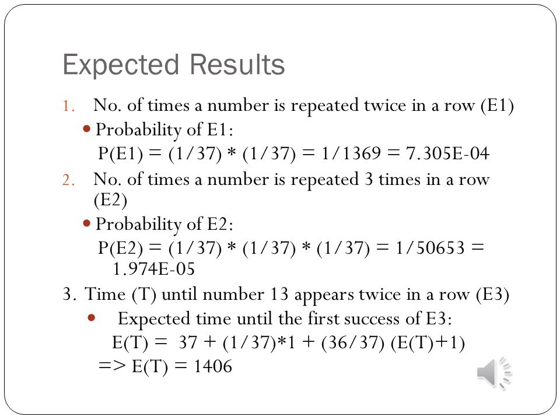As a result, we can say that the expected number of spins E to receive number 13 consecutively is: E = 37 + (1/37)(1) + (36/37)(E + 1). Solving that equation gives E = 1,406. That means, on average, after 1,406 spins I am expected to have seen consecutive 13s.